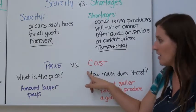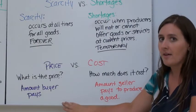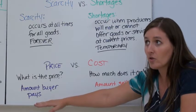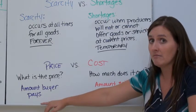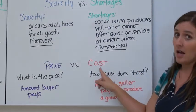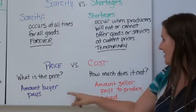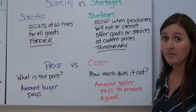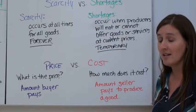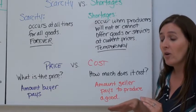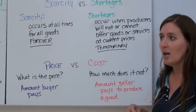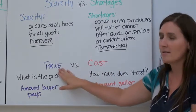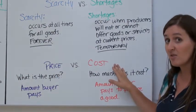The next concept is price versus cost — in economics, they are different. Price is the amount a buyer pays; you go to the store and pay $3.50 for milk. Cost, however, is the amount the seller pays to produce a good — raising the cow, paying the milker, sending the truck to the grocery store. Price is what the buyer pays; cost is what the seller pays to make the product.